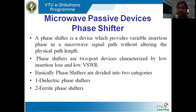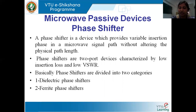Phase shifters have very low insertion loss, that is very low VSWR, which means very less reflection. Usually we want to make the reflection completely zero. By inserting these phase shifters, we want to change the path length covered by the wave, and because of that we change the phase associated with the signal. We have two types of phase shifters: dielectric phase shifters and ferrite phase shifters.